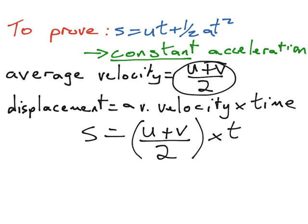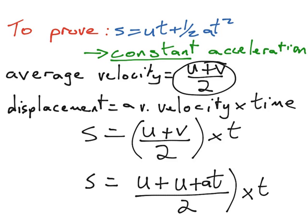We then remember from our first equation of motion that instead of having the letter v, we can substitute in u plus at. So the top part of our fraction will become u plus u plus at, still divided by 2, and it's still all multiplied by the time.